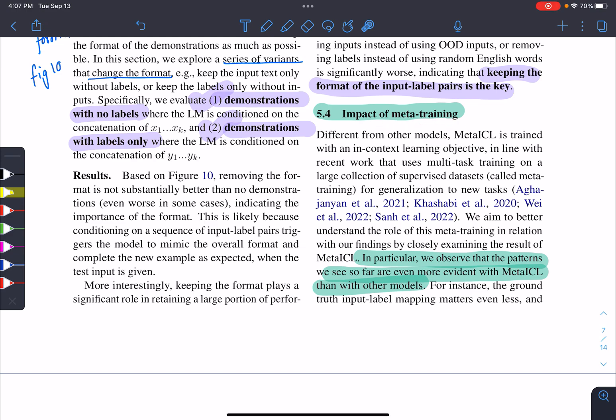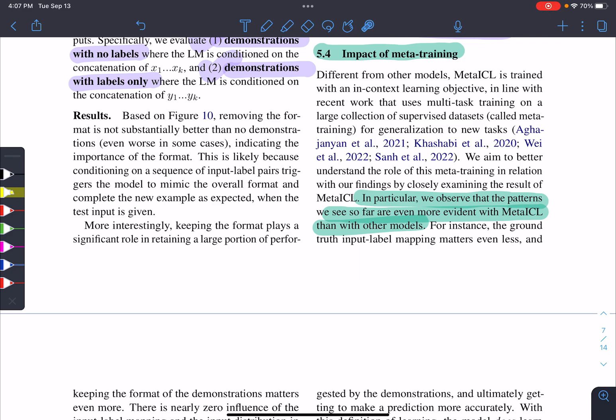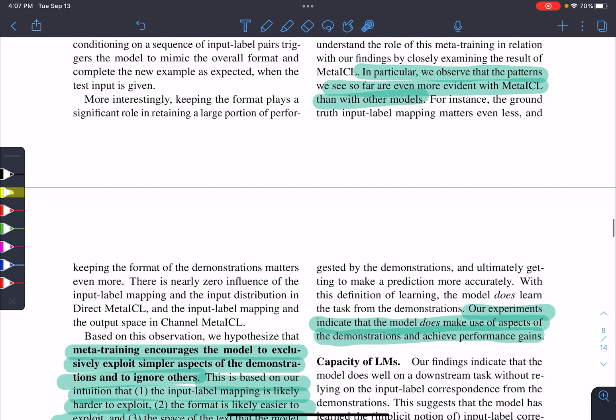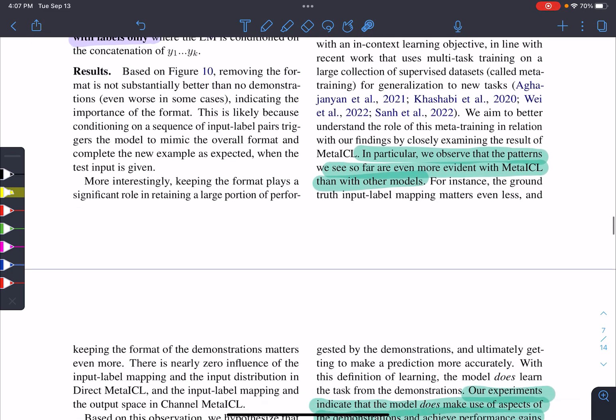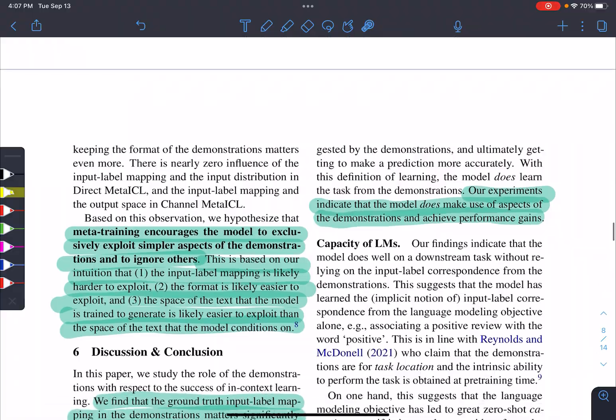They also explain about meta-learning. Meta-ICL is one of the models which is trained on in-context learning objective. What it means is that, while training, they had demonstrations as input, and labels as output. So it was trained in this in-context learning setup. For that, the impact has more. Basically, meta-learning actually helps to retain the in-context learning property.